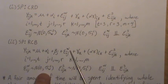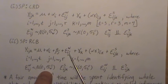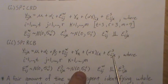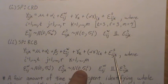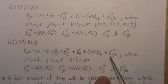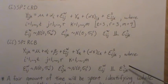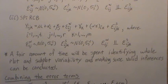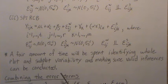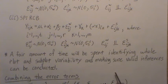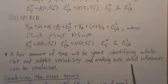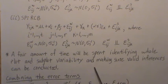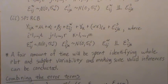Each error term is assumed to be normally distributed with mean zero and variance sigma_s squared, and errors are independent. A fair amount of time is going to be spent identifying whole plot and subplot variability to make sure valid inferences can be conducted. That's a brief introduction.